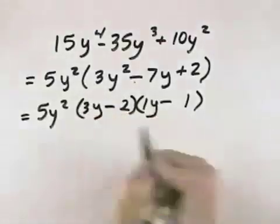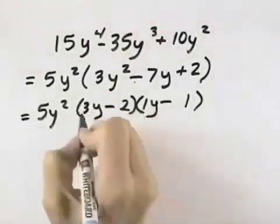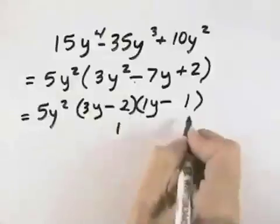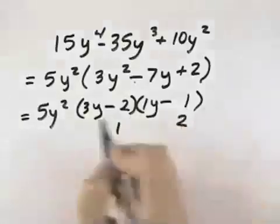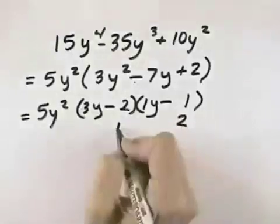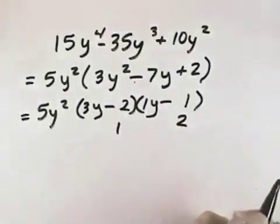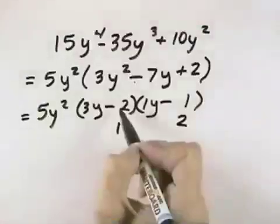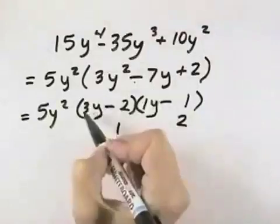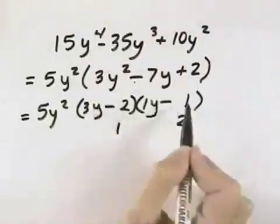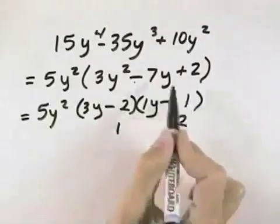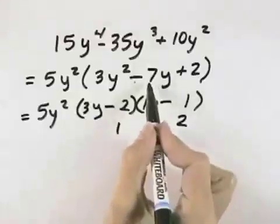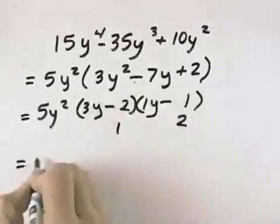This is one way we could try this, where the 2 is multiplied by the 1 and the 3 is multiplied by the 1. But if that doesn't work, we can reverse these. Looking at this combination, our inner term is negative 2y, our outer term is negative 3y. That gives us negative 5y, so that combination will not work.